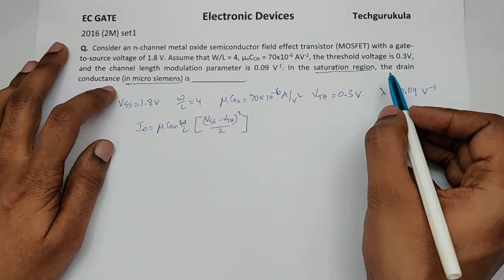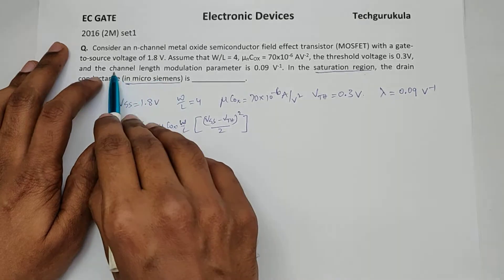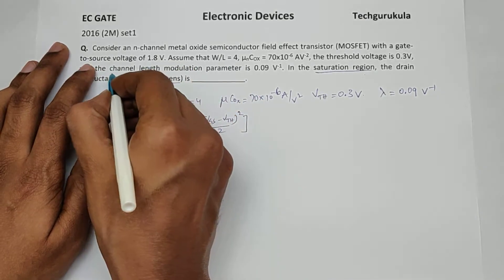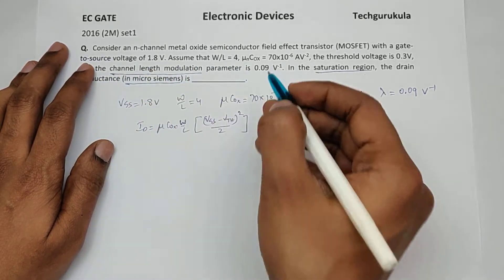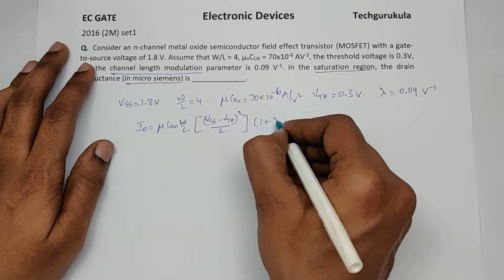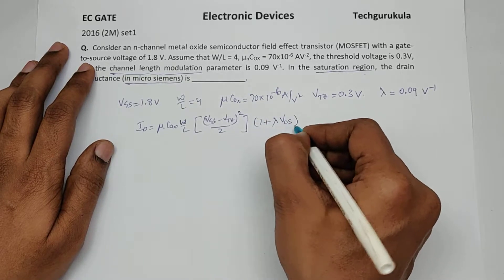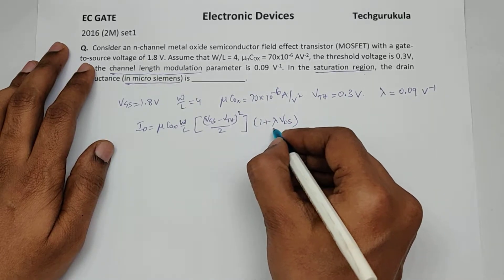Now if we consider, as they have given channel length modulation parameter, the CLM parameter is given, which means we have to take 1 plus lambda times VDS. This is the channel length modulation parameter.